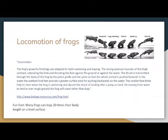Locomotion of frogs. The frog's powerful hind legs are adapted for both swimming and leaping. Their strong thigh muscles contract and extend the limb, which pushes their foot against the ground or water. Frogs mostly use their hind legs to push off the ground to move across land and water, and they can leap up to 20 times their body length on a level surface.